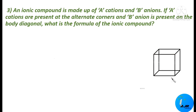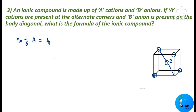In the cube, A cation is present in alternate corners — so four corners are occupied. Each corner atom contribution is 1/8. Number of A = 4 × 1/8 = 1/2.